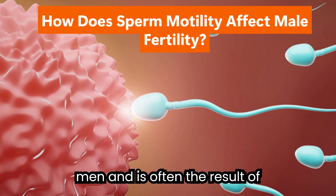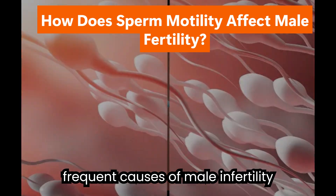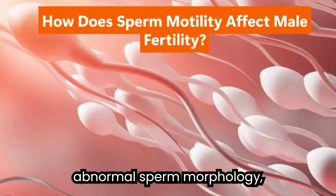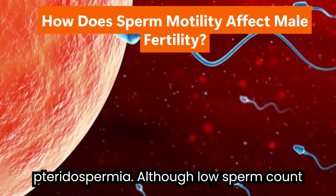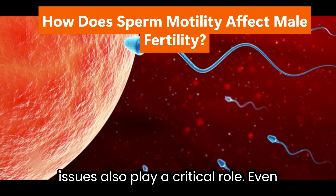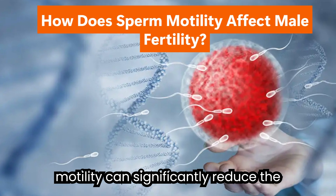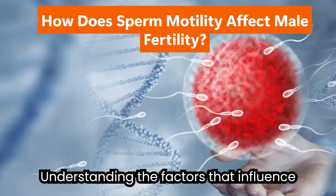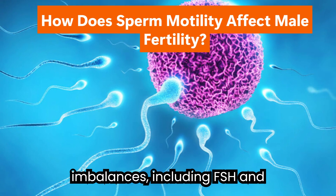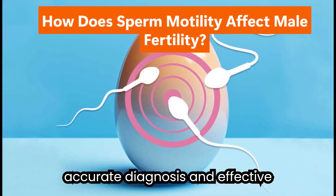Male factor infertility affects roughly 7% of men and is often the result of semen abnormalities. The most frequent causes include low sperm count (oligospermia), poor sperm motility, and abnormal sperm morphology. Although low sperm count accounts for around 90% of male infertility cases, sperm motility issues also play a critical role. Even when the sperm count is adequate, low motility can significantly reduce the likelihood of successful fertilization. Understanding factors such as hormone imbalances — including FSH and testosterone — lifestyle choices, and environmental exposures is essential for accurate diagnosis and effective intervention.